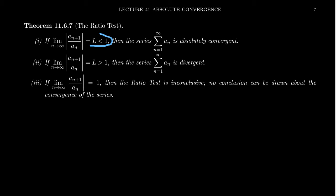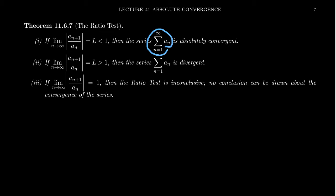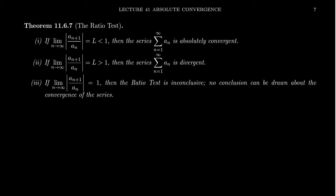This limit is basically measuring how close together the terms in the sequence are — how rapidly the ratio sequence is shrinking. If the terms are shrinking at a rapid enough rate, the limit will be less than one, and the sum will be convergent because a_n is decreasing fast enough. On the other hand, if the limit is greater than one, this tells us the series is divergent.